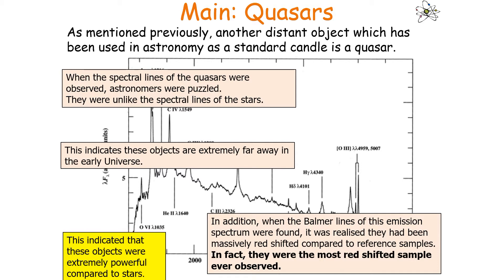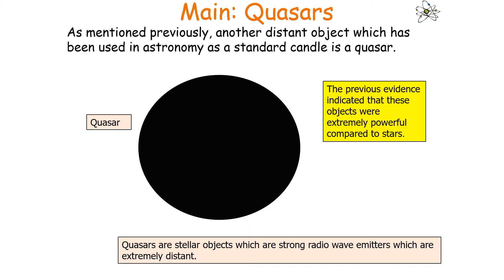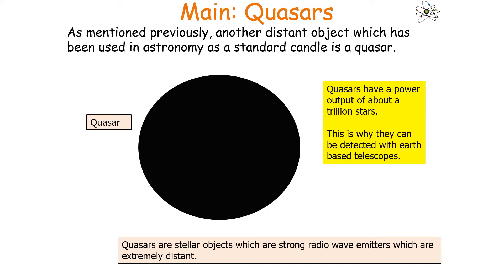To clarify: quasars are stellar objects which are strong radio wave emitters and are extremely distant. The previous evidence indicated that these objects were extremely powerful compared to stars. Quasars have a power output equivalent to about 10 galaxies, or about a trillion stars, which is why they can be detected with Earth-based telescopes.